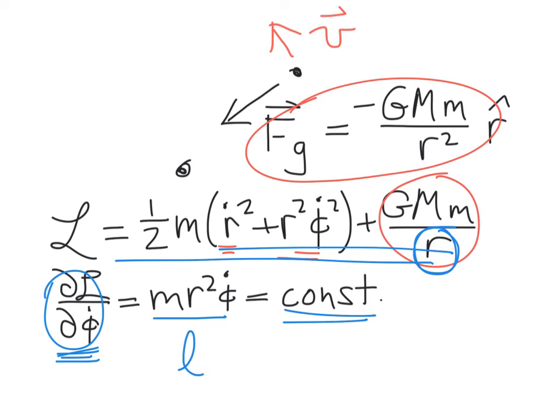Therefore this derivative, which happens to be m r squared phi dot, is a constant for this system. And m r squared phi dot is just the angular momentum of the orbiting particle. So in the case of a central force — a gravitational pull — the angular momentum is conserved. The generalized momentum corresponding to the phi coordinate is a conserved quantity.